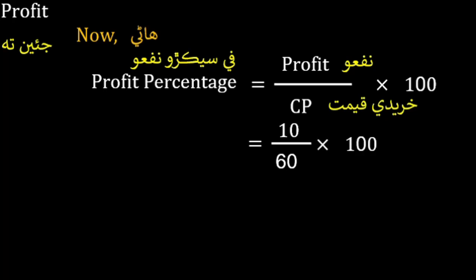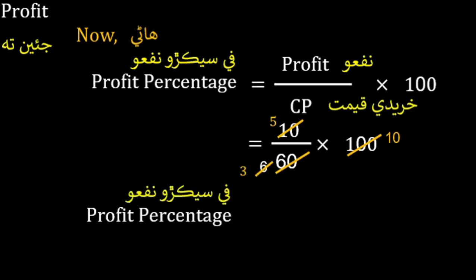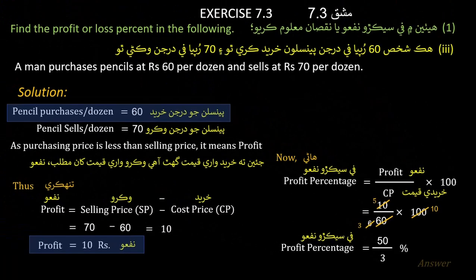Profit percentage = profit divided by cost price × 100 = 10/60 × 100. Dividing: 100 by 10 gives 10, and 60 by 6 gives 10, then 10 by 2 gives 5. Profit percentage is 50/3 percent.